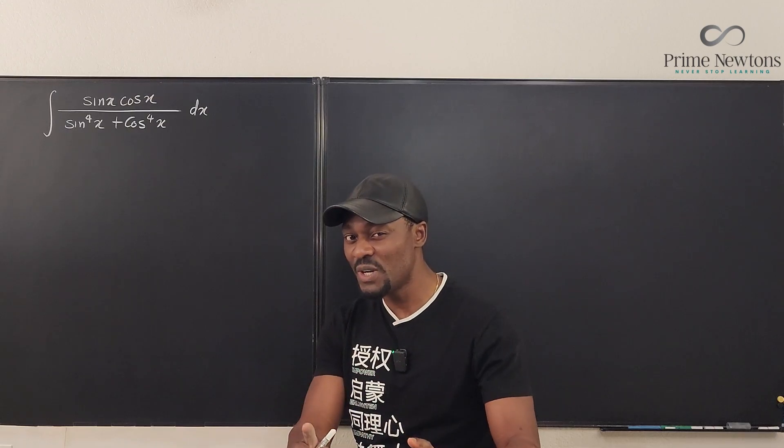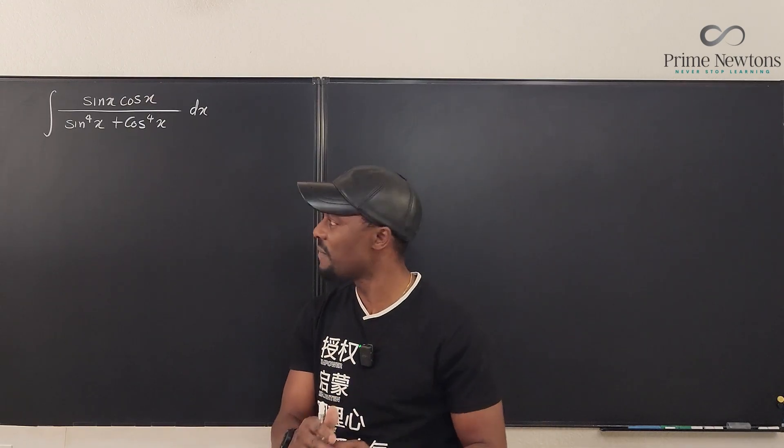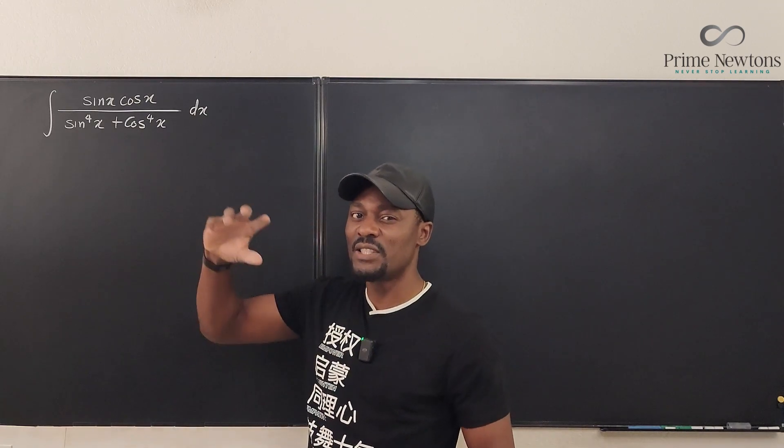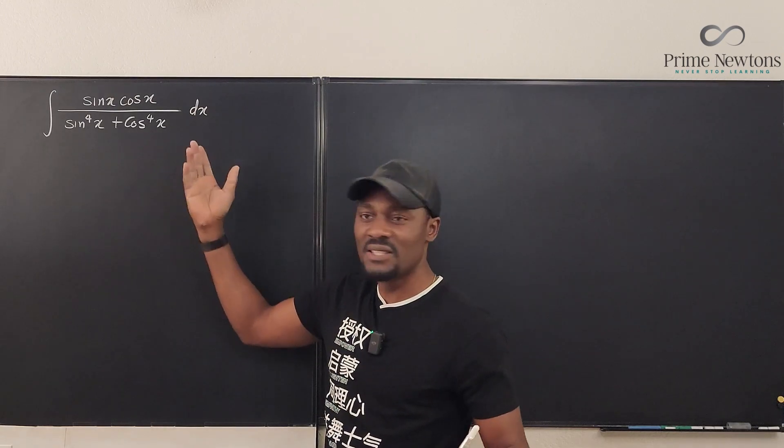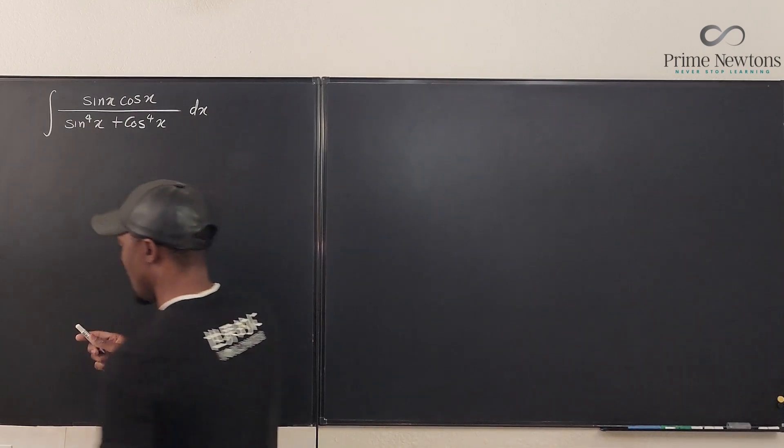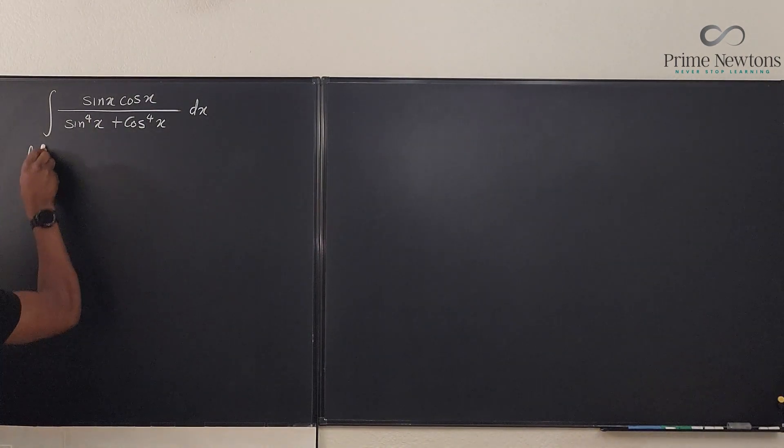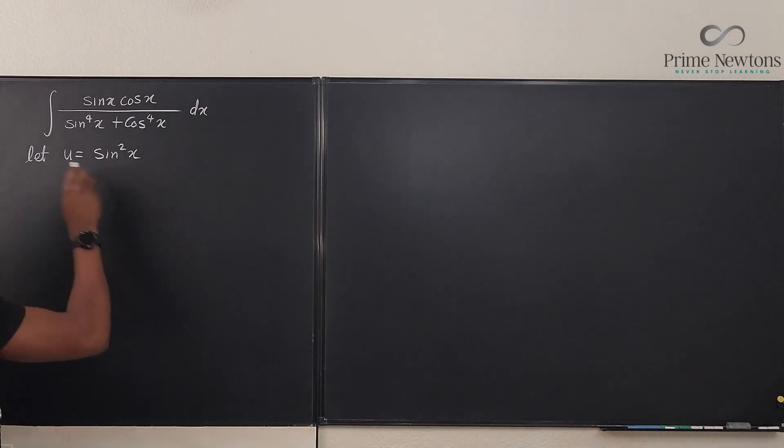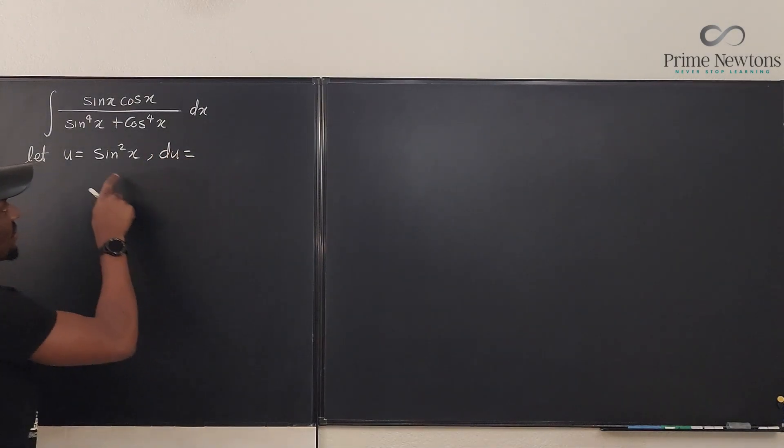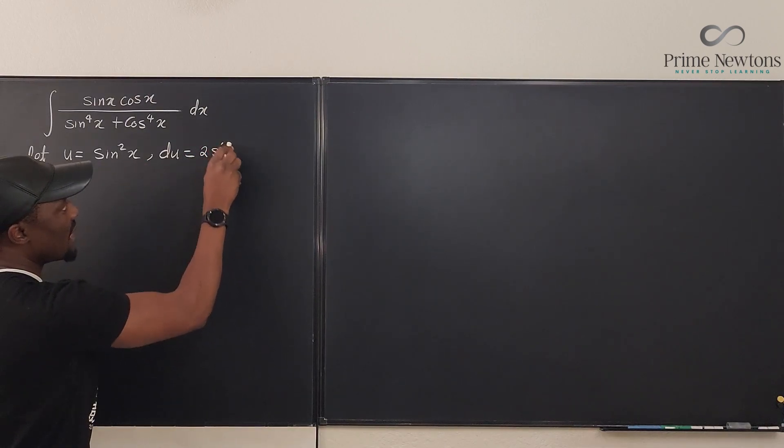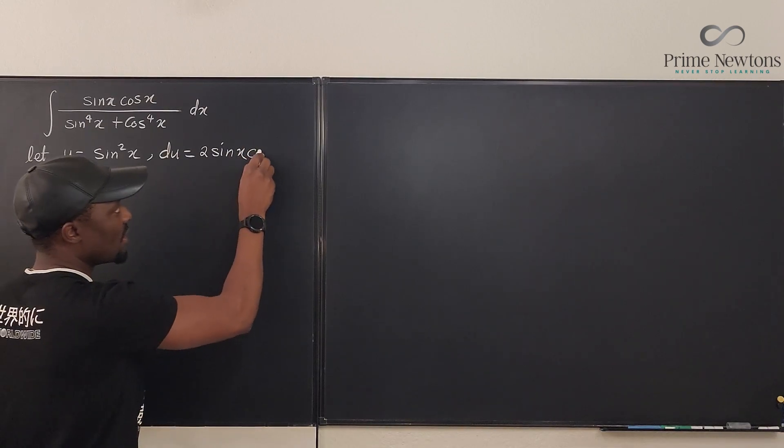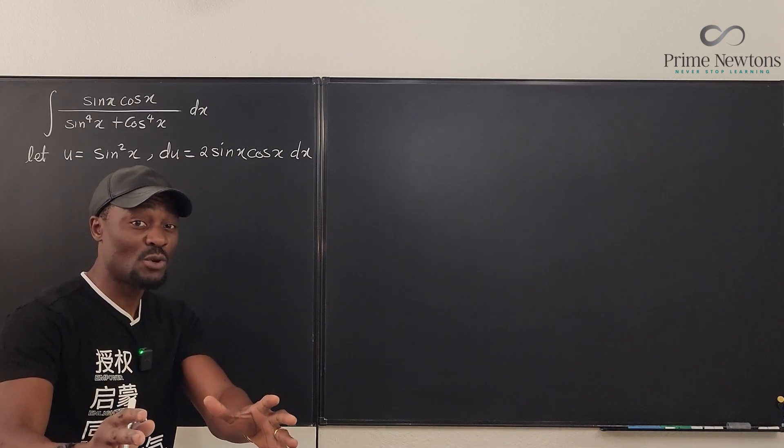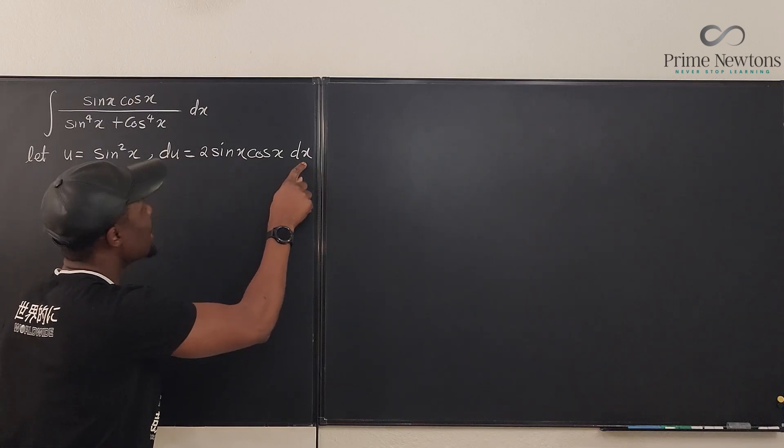So the first thing we're going to do is a good u-substitution. You don't have to do u-substitution, but I think if I can say let u be sine squared of something, then maybe I can make things a lot easier. Let's say let u be sine squared x. Let's quickly take the derivative. We know that du will be, if we apply the chain rule here, it's going to be 2 sine x times the derivative of sine, which is cosine x dx.